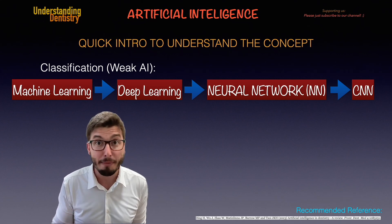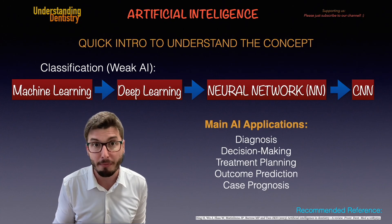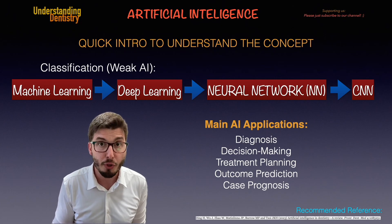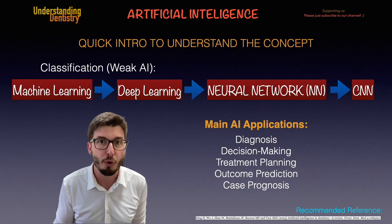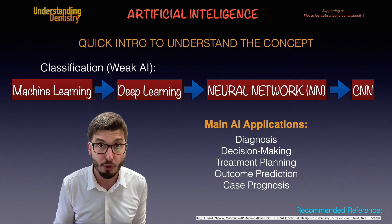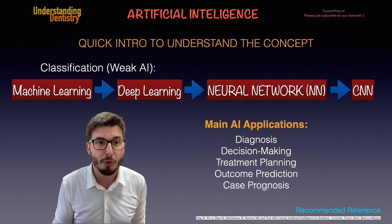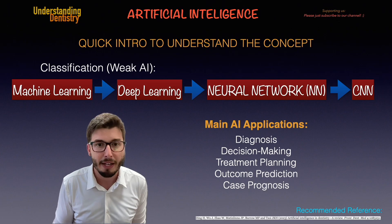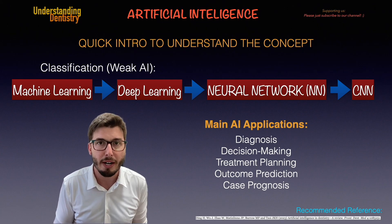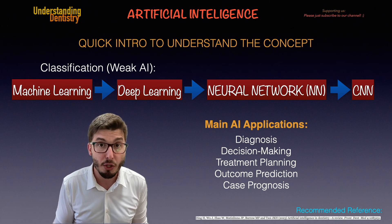Let's understand the main general applications of AI in dentistry. First, we have diagnosis — the software can help identify a lesion based on the data it is fed. Then we have decision making, where the software understands which treatment is best based on identified features, which is also related to treatment planning. We also have outcome prediction, where the software provides a second opinion on the probable outcome, and finally case prognosis — assessing the odds of a favorable or worse prognosis for the patient.